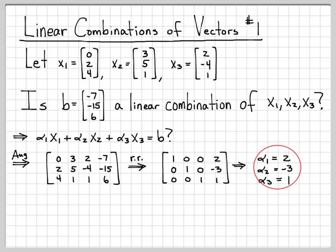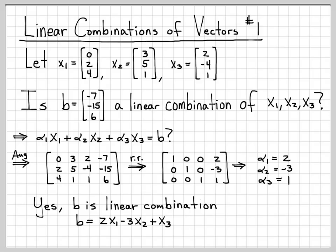These are the numbers that make this equation true. So yes, it is possible to write b as a linear combination of the vectors x1, x2, and x3. B is a linear combination of these vectors.